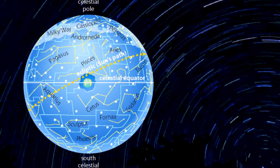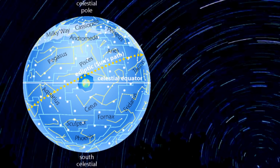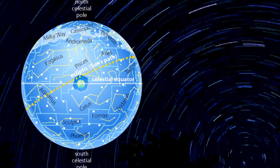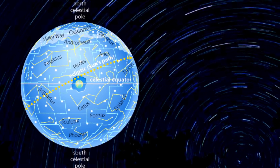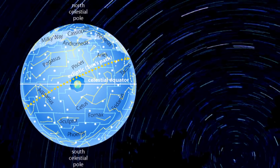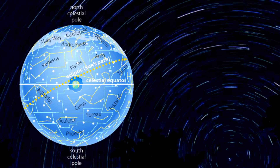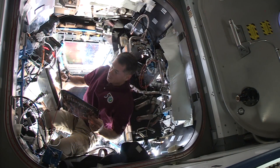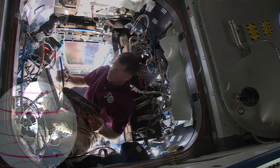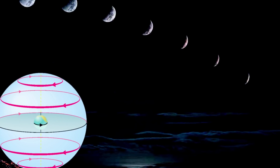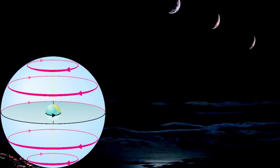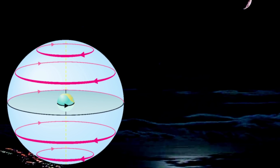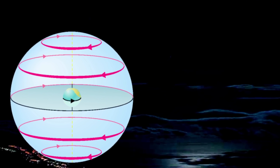My new idea seemed to make a lot of sense. I could explain the daily paths of the sun, moon, and stars in my sky by picturing the great sphere spinning once each day around our Earth. To account for the changing seasons and the phases of the moon, I imagined the sun and moon moving slowly among the constellations on the giant sphere.